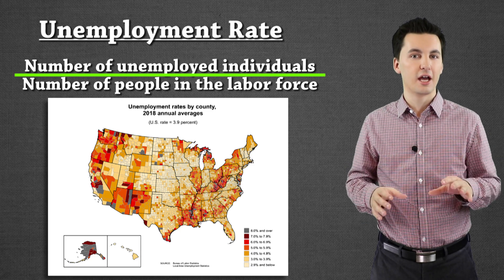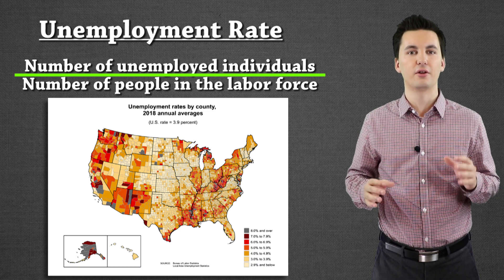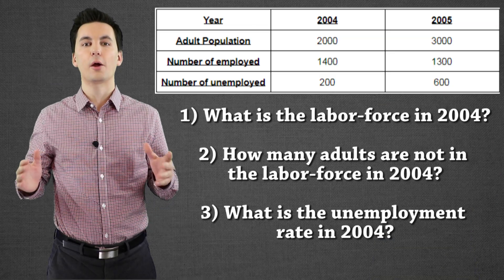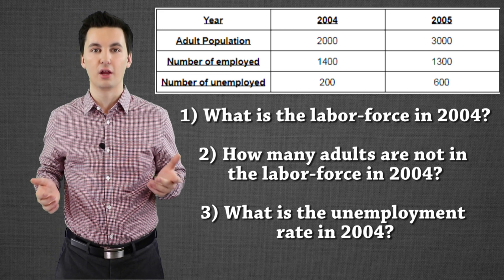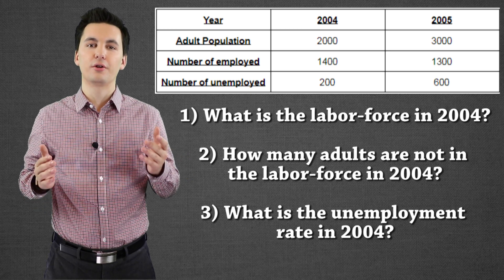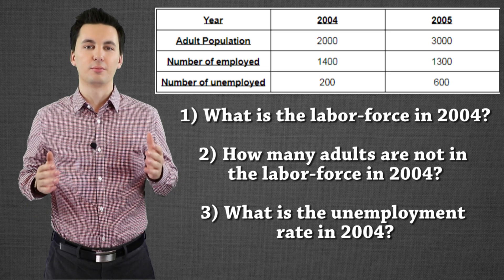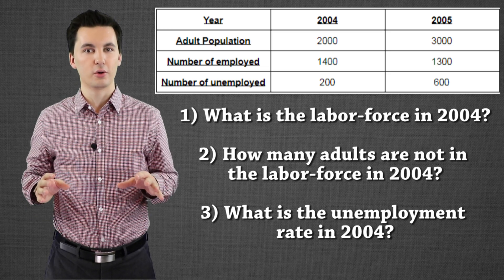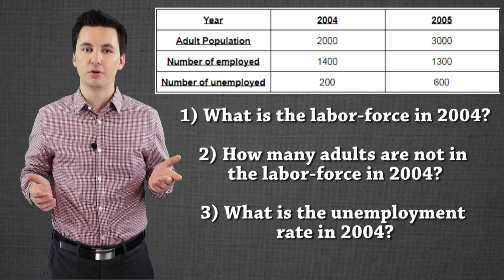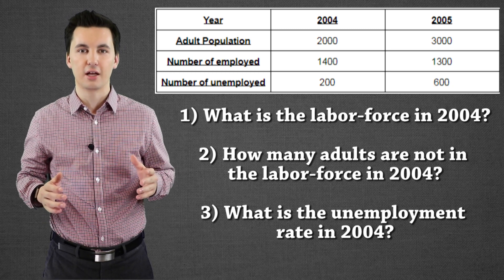Before we go on to our next formula — the labor participation rate — let's do a couple of practice problems to make sure you understand how to find the unemployment rate and total labor force for a society. Using the table on screen, answer the following questions: What would be our labor force in 2004? How many people are not part of our total labor force in 2004? And what is the unemployment rate of 2004? We can see the adult population, the number of employed people, and the number of unemployed people. Pause this video and try to answer these three questions.